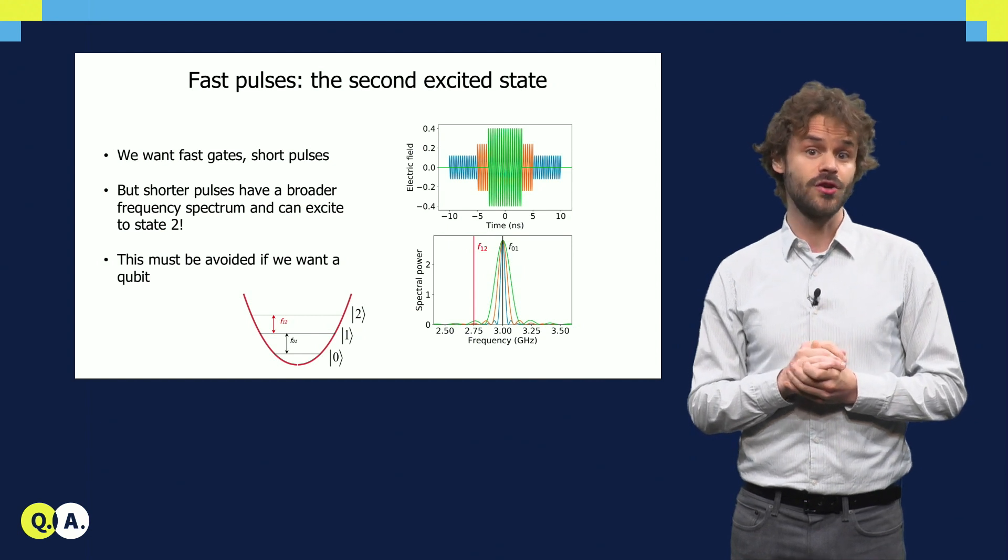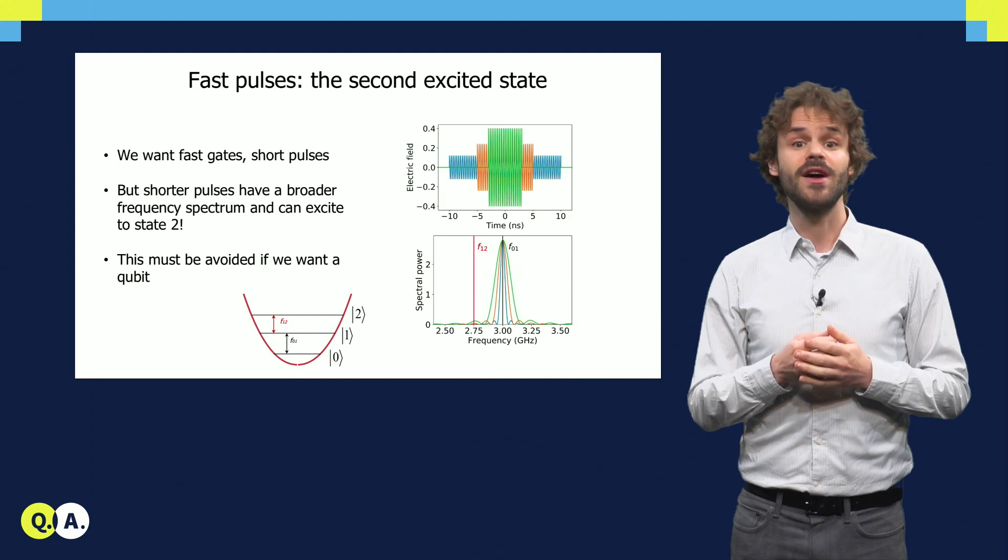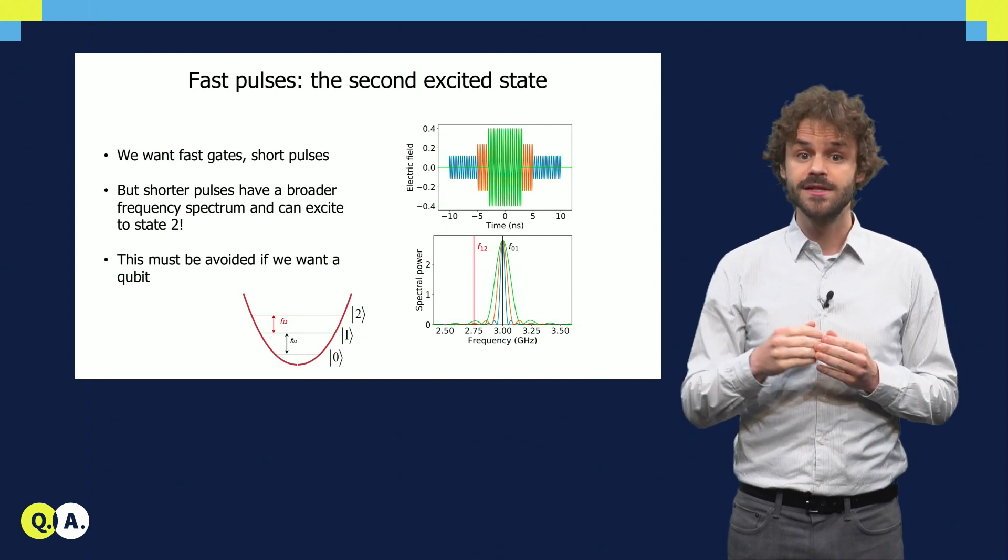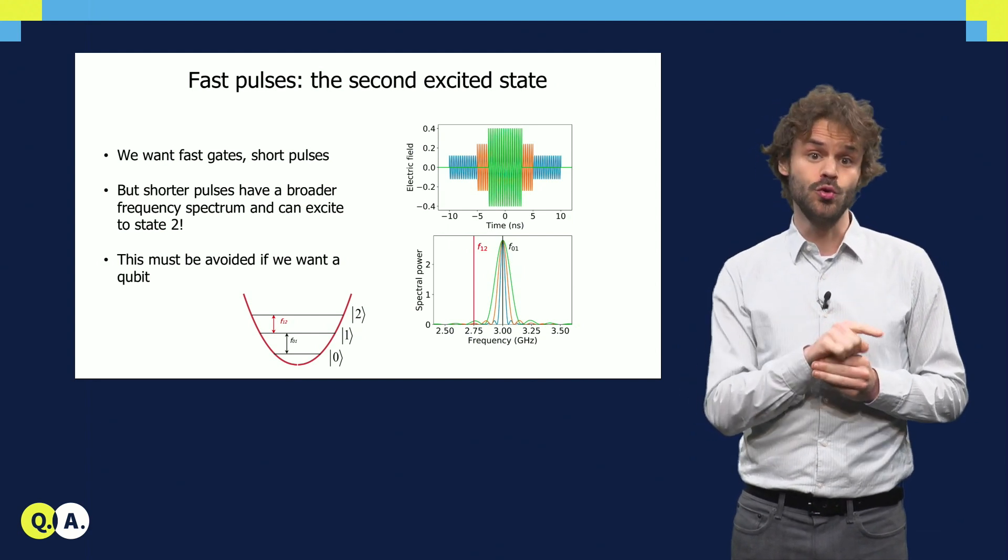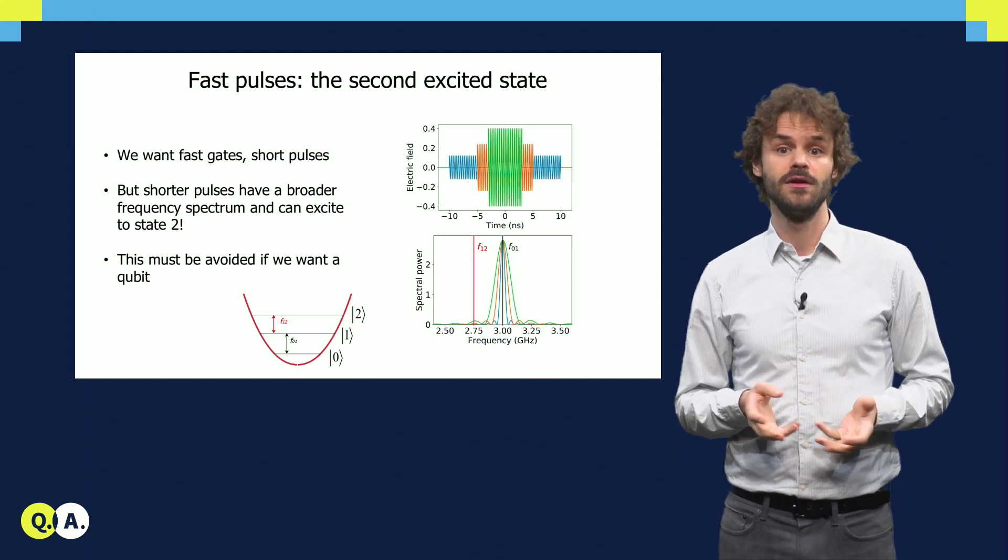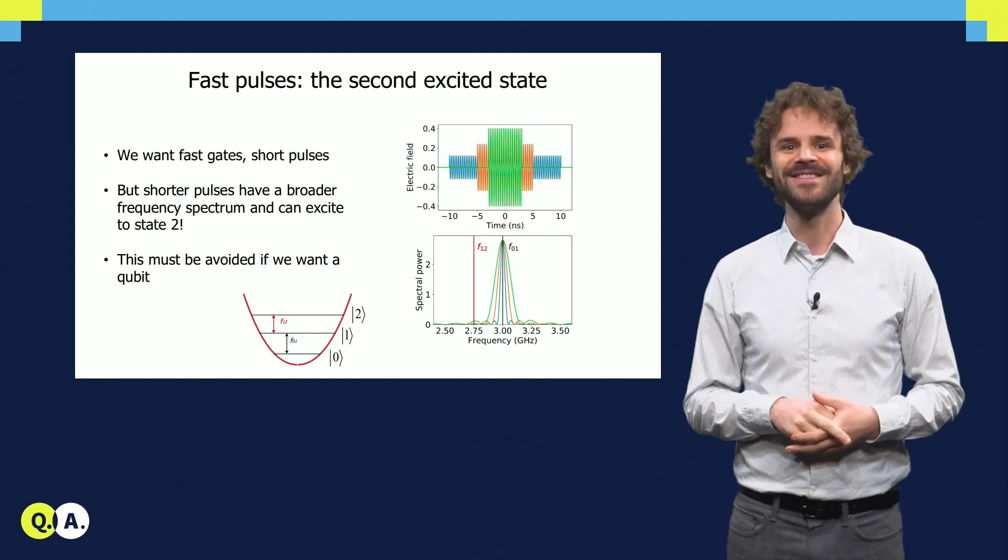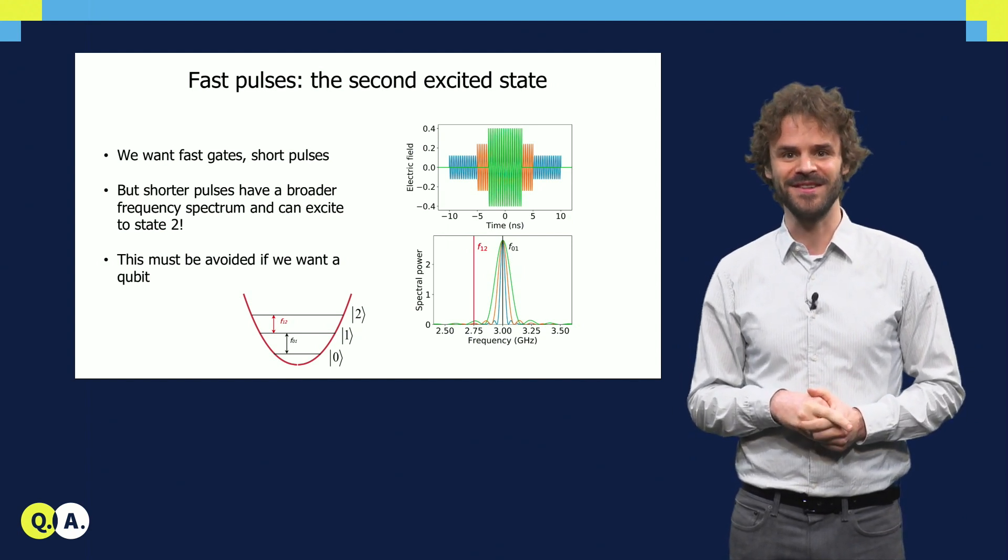Unfortunately, that means that if we make the pulses shorter and shorter, at some point the spectrum is so broad that the pulse drives oscillations not only between the states 0 and 1, but also 1 and 2. Then the transmon does not work as a qubit anymore, since three transmon states are involved, and the nice Bloch sphere picture rotation breaks down.